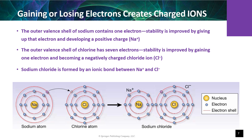Sodium's electrons occupy three shells: two in the first shell, eight in the second shell, and one in the third shell. When sodium releases the outer electron, the middle shell becomes the valence shell. Chlorine needs one electron to fulfill the octet rule of eight, and it can accept an electron from sodium so that both atoms now fulfill the rule of eight and become stable.